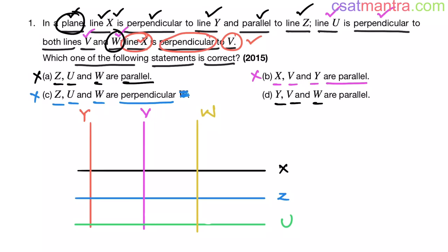y, v and w are parallel. y, v and w are parallel. So this option is correct. d is our answer.